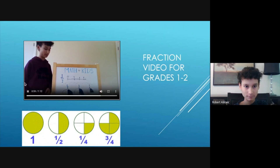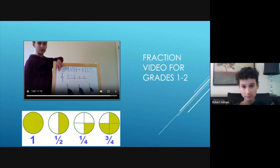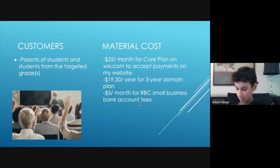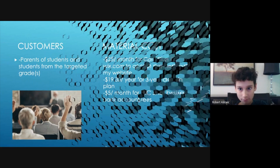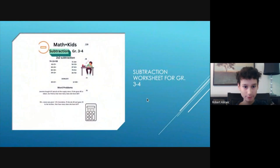It's simple. The bottom number, called the denominator, tells us how many pieces we need to cut. The top number, called the numerator, tells us how many of those pieces we want. Here is my worksheet for the Grade 3 to 4 subtraction video — it includes two-by-two subtraction as well as word problems.